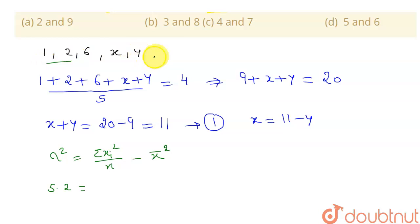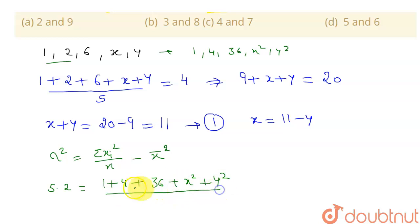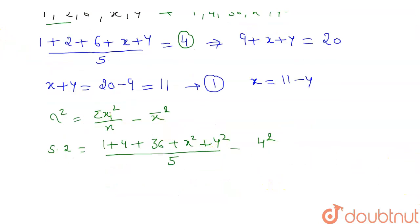Squaring each observation: one squared is one, two squared is four, six squared is thirty-six, and then x squared and y squared. So we have one plus four plus thirty-six plus x squared plus y squared, divided by five, minus the mean squared, which is four squared, equals 5.2.